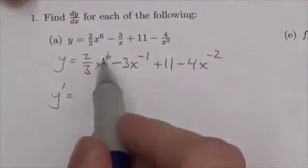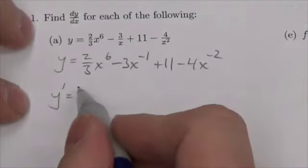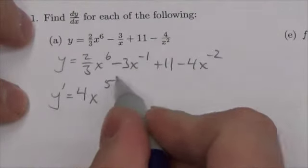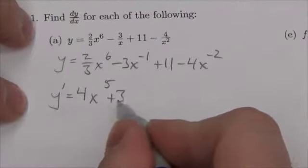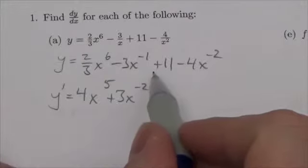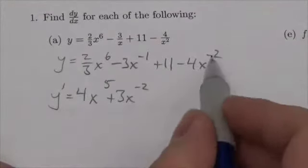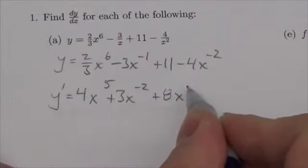So y' is going to equal—now I'm just going to bring down the 6. Now, 6 times 2/3 is going to be 4, and then I take 1 away. Bring down the negative 1, and I will get positive 3x to the negative 2. The derivative of a constant is 0, so this basically disappears. And then you bring down the negative 2, and I will get positive 8x to the negative 3.